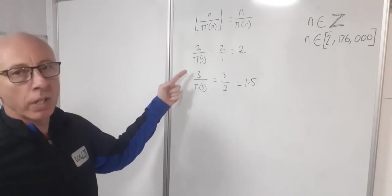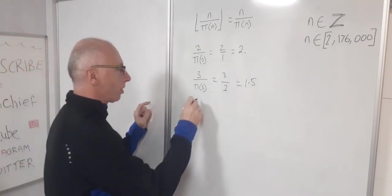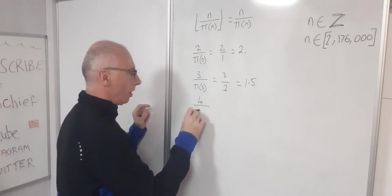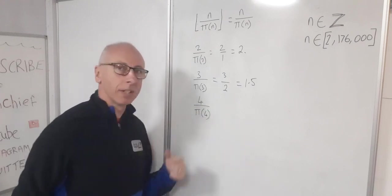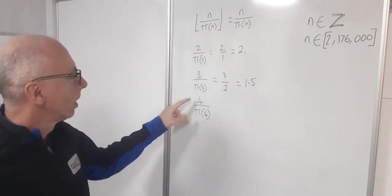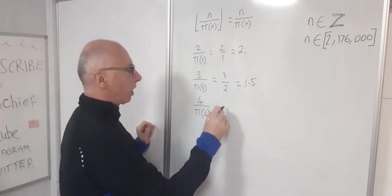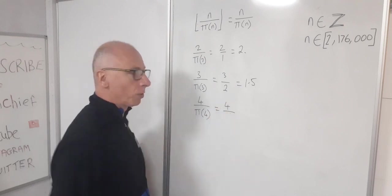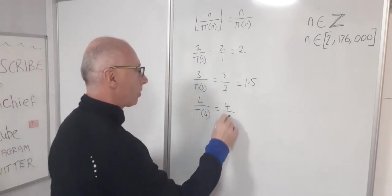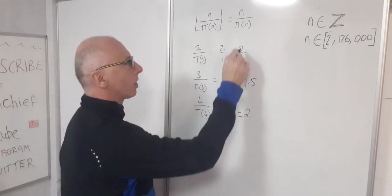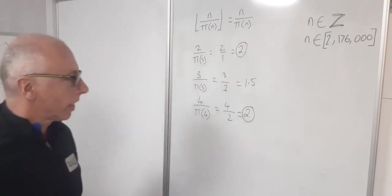So what now we want to look at is number 4. Let's see what that gives us. So we'll quickly look at this one and then we'll see if we can find a pattern in the sequence here. So 4 over pi of 4. Now the prime numbers up to and including 4, we know there's just 2, so 2 and 3. So that gives us 4 over 2 which gives us an integer. So that's great.